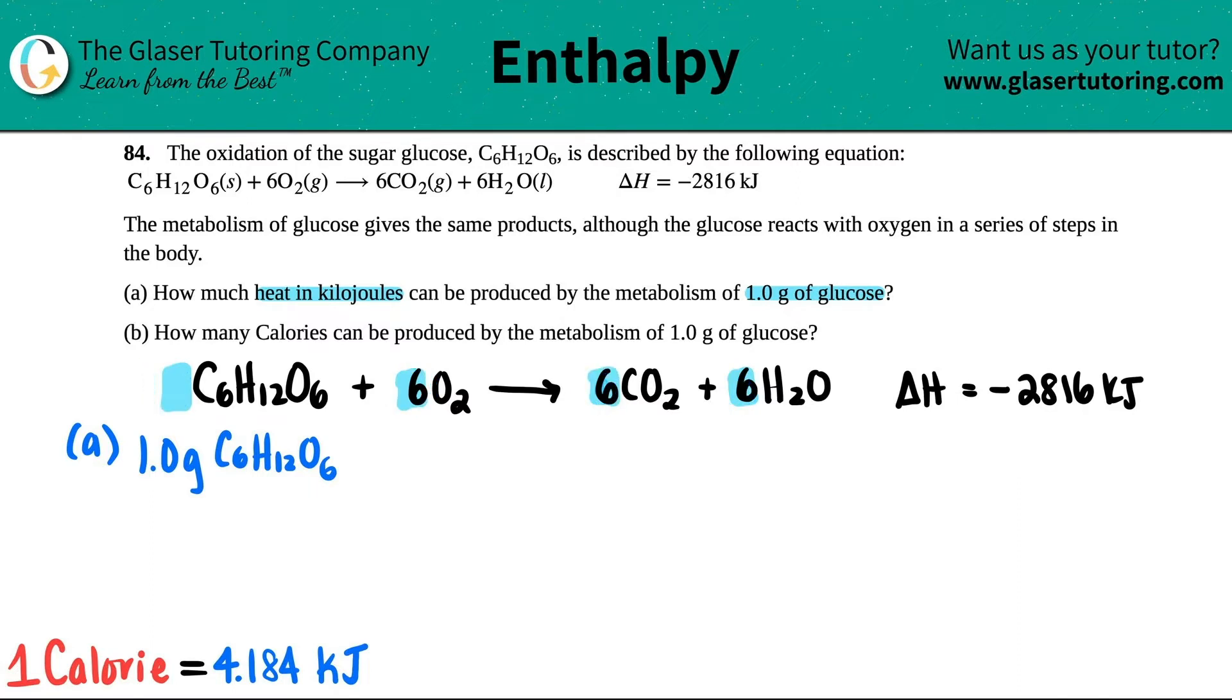And remember, the coefficients are mole values, right? Every time that we want to use those coefficients, it's always a mole value. So what's the first thing that I have to do? Yeah, I got to get grams into moles. So times by a ratio, throw the gram of C6H12O6 on the bottom, put the mole of C6H12O6 on the top.